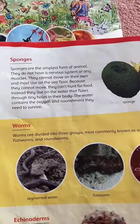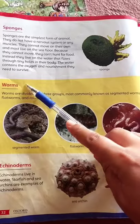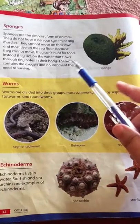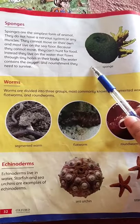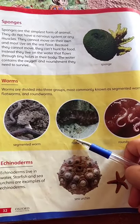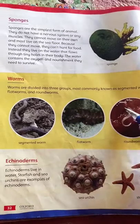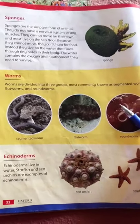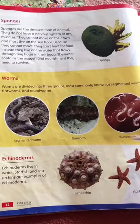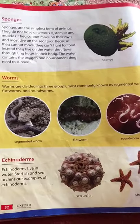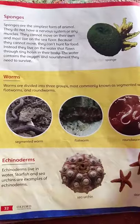The next invertebrate class is Worms. Worms are different from insects. There are segmented worms and roundworms. A common example is the earthworm — in the rain, you can see earthworms on the ground.